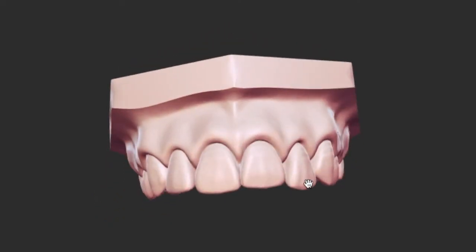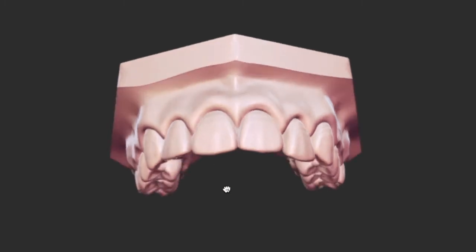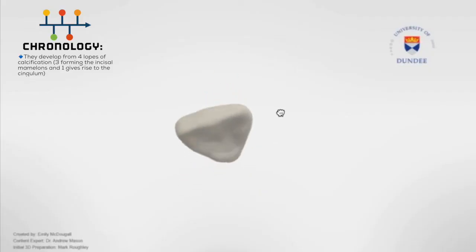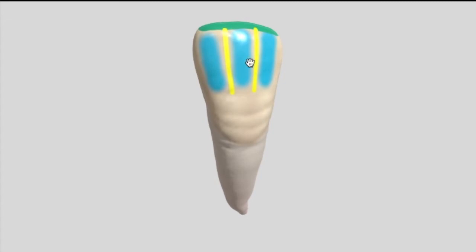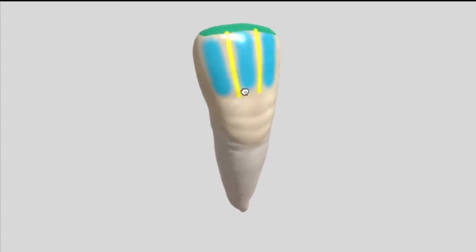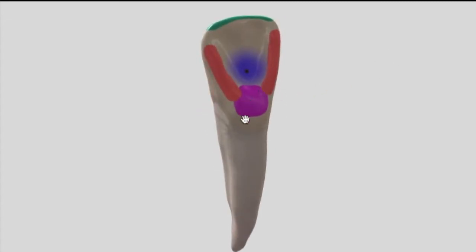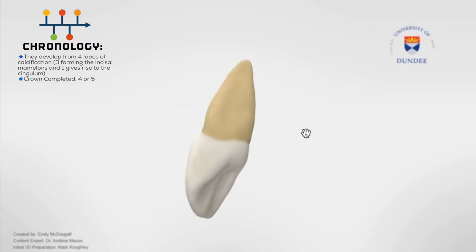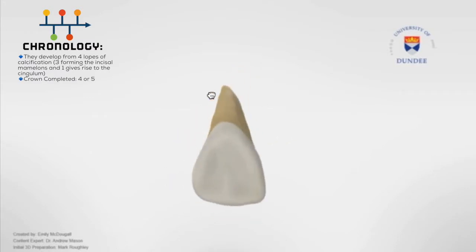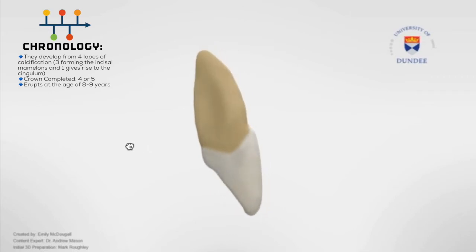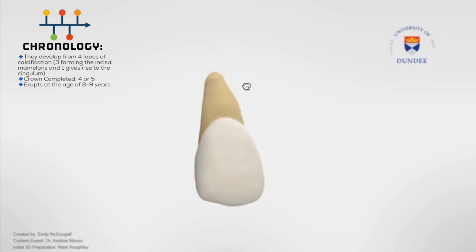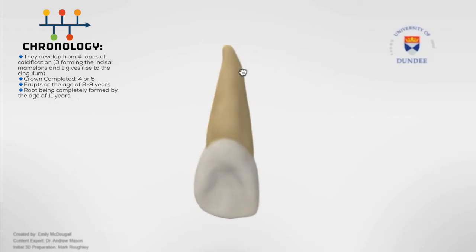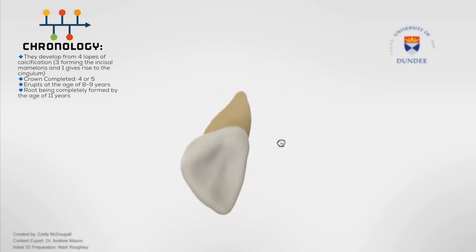These are a pair located laterally to their respective central incisors. They develop from four lobes of calcification — three forming the incisal mammelons and one giving rise to the cingulum. The crown concludes its development around the age of 4 to 5, allowing the tooth to erupt at the age of 8 to 9, with its root being completely formed by the age of 11 years.